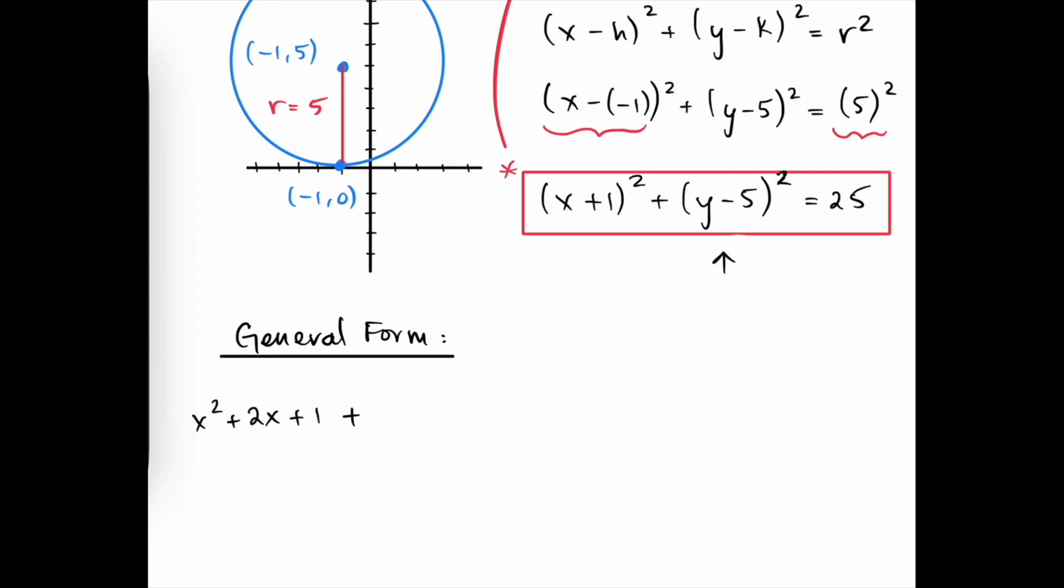And then to that, we're going to add the second binomial multiplied out. So that's y minus 5 quantity squared, which is y minus 5 times y minus 5. Again, we have to FOIL this out.